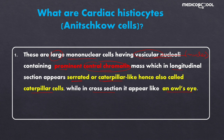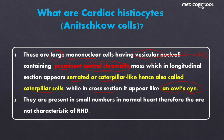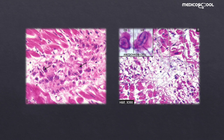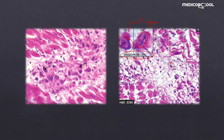Although Anitschkow cells are present in small numbers in the normal heart, they are not considered characteristic of rheumatic heart disease on their own. Here we can see the Anitschkow cells, and this is a magnified picture showing the longitudinal section with the nucleus and the peripheral caterpillar-like central chromatin mass. In another view, the nucleus appears like an owl's eye.